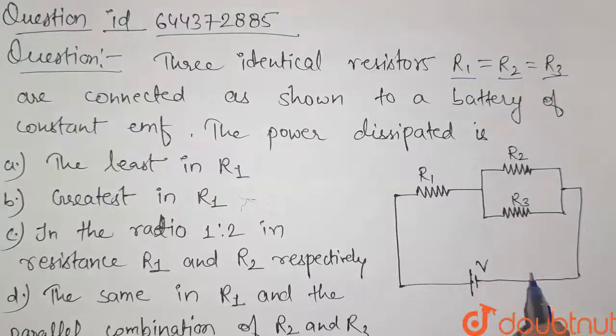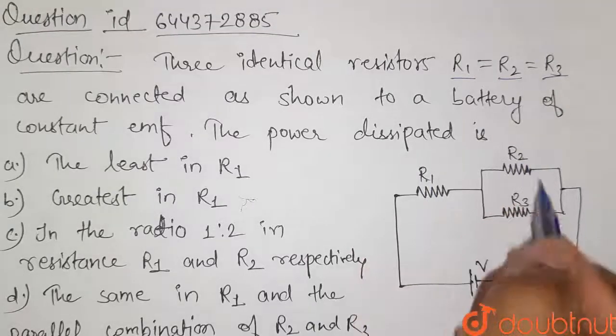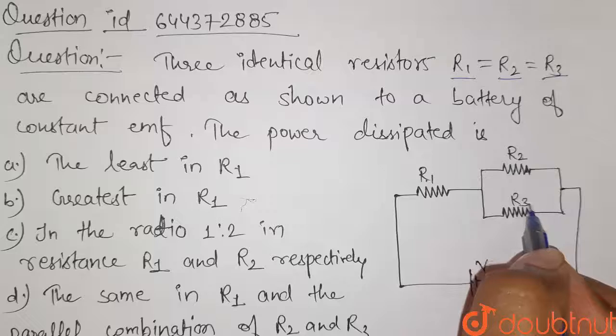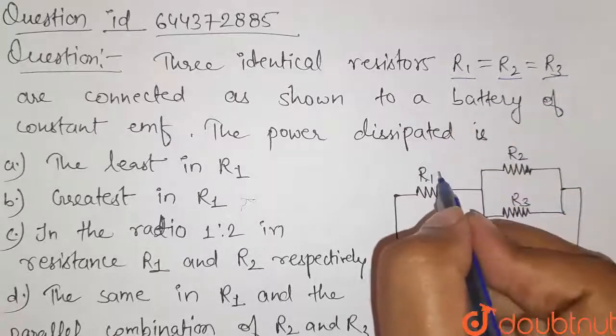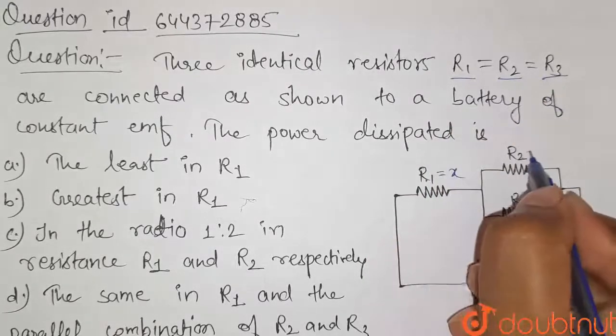So this is the given circuit here. This is R1, this is R2, and this is R3. It is given that each of the three are equal, so we can take this as a common value X.